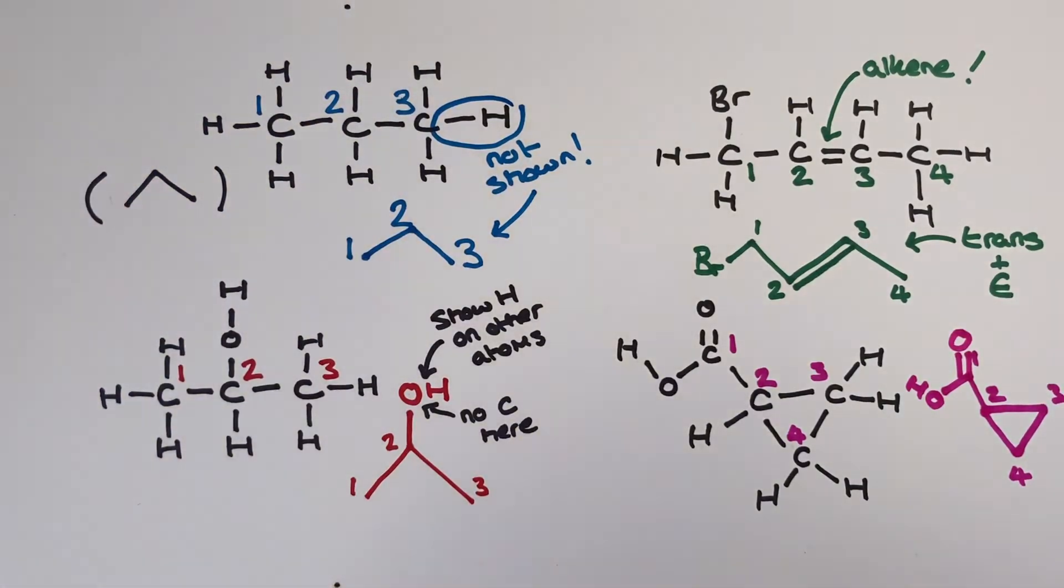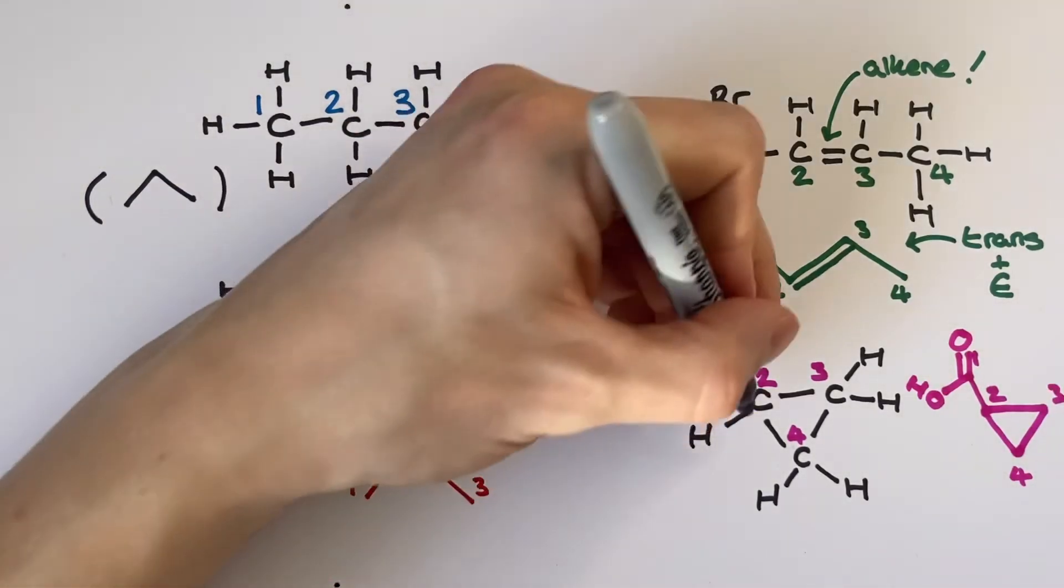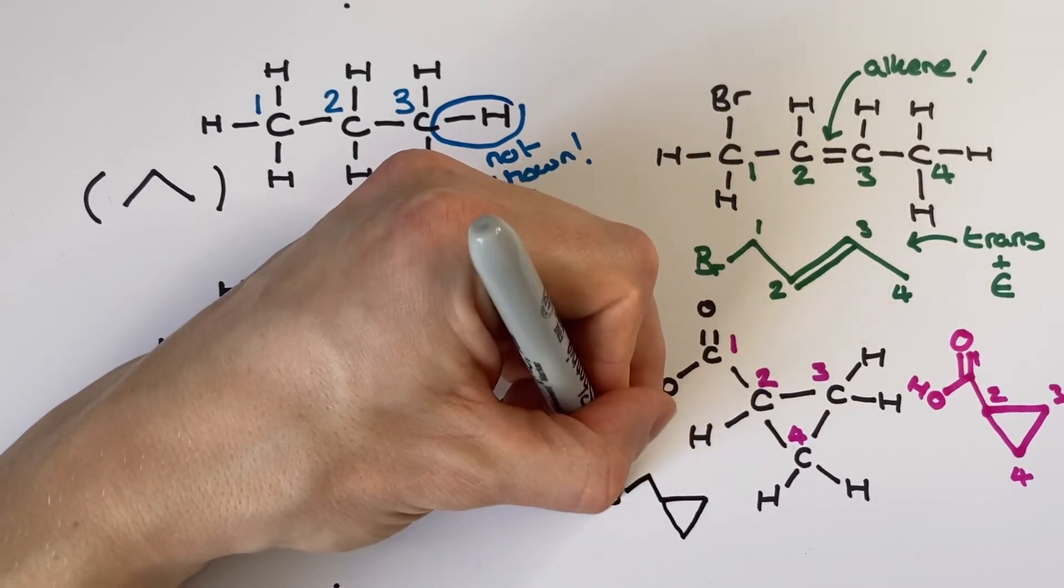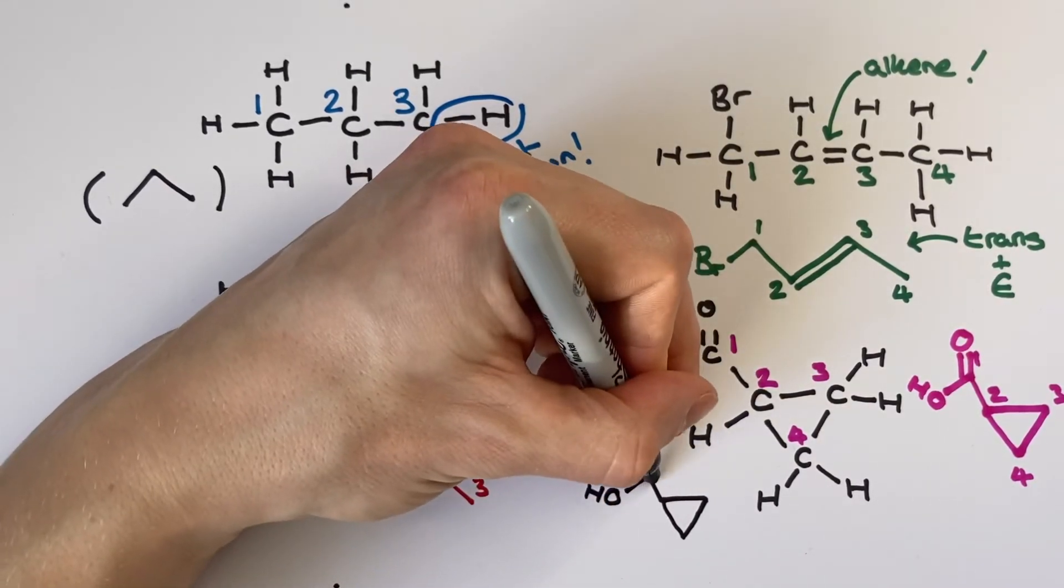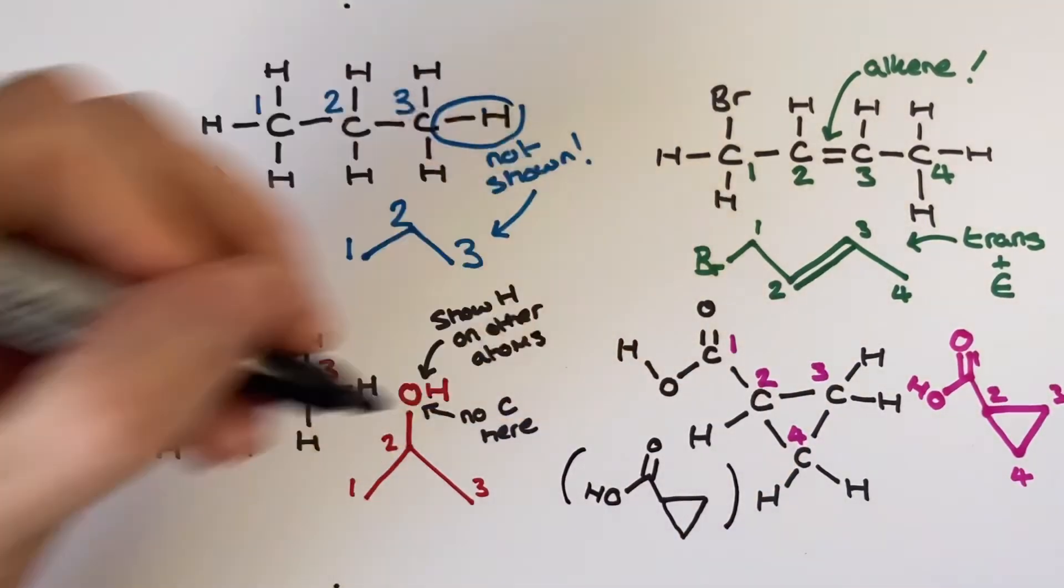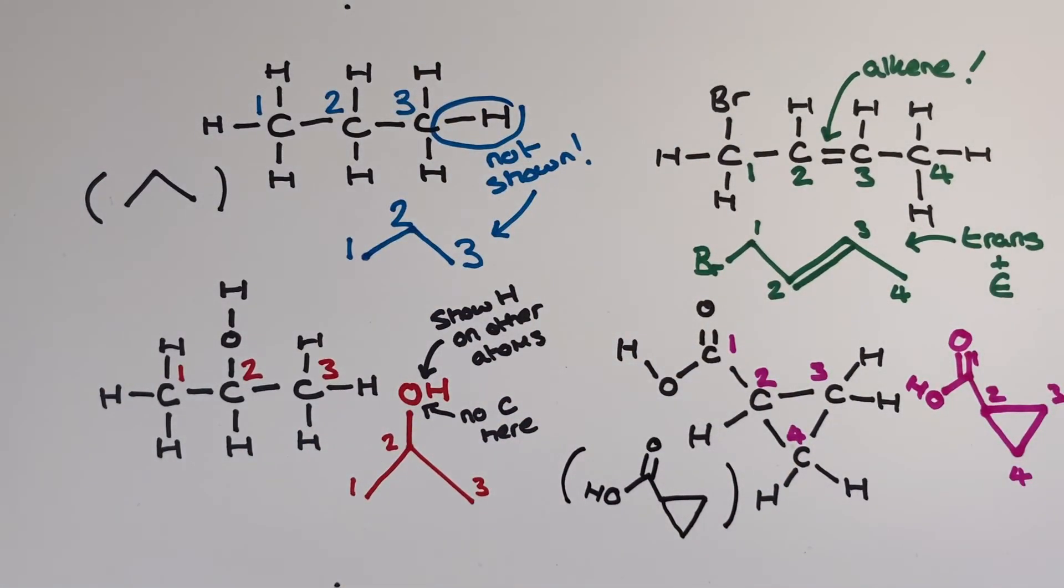I'm going to redraw this one again in just brackets here so you can see it more clearly but that's all it takes. Every end of every line and every corner in the line represents a carbon atom unless you show a different atom at the end of the line. I hope this gives you a really clear set of rules that you can follow when drawing your skeletal structures in organic chemistry.